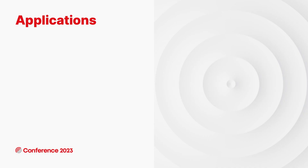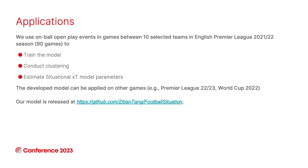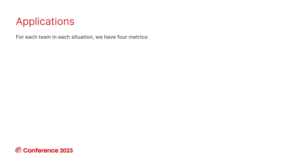With these techniques, let's go into the applications. In this work, we focus on open play events. We use on-ball open play events in games between 10 selected teams in the English Premier League 2021-22 season to develop all the aforementioned models. I want to mention that even though our model is developed on this part of our data, it can also be used to analyze other leagues or other seasons. We released our model on GitHub, so you can feel free to use it to analyze other games. For each team in each situation, we developed four metrics to describe their playing styles and strengths.